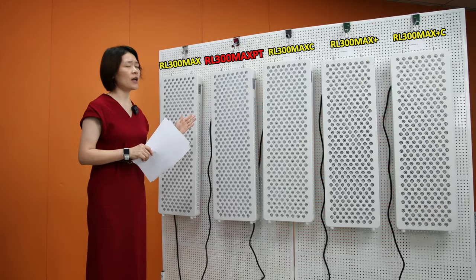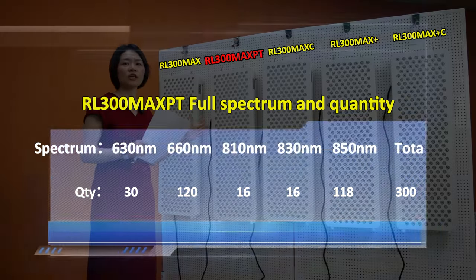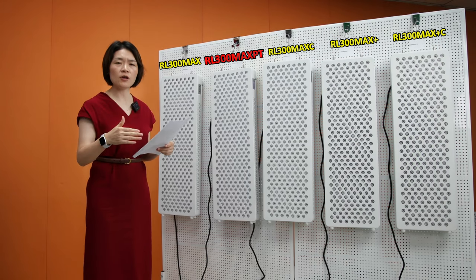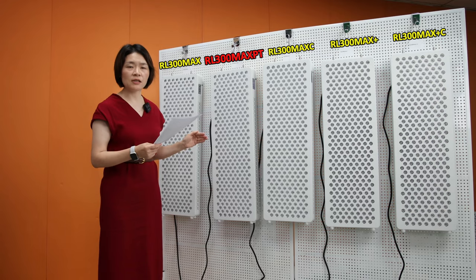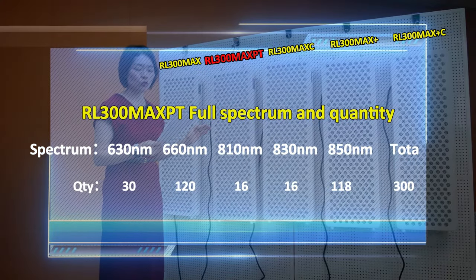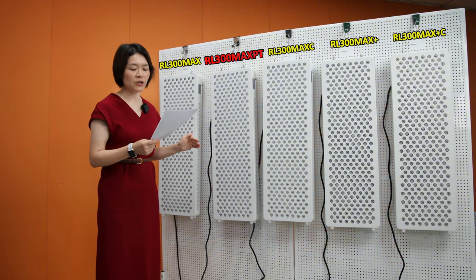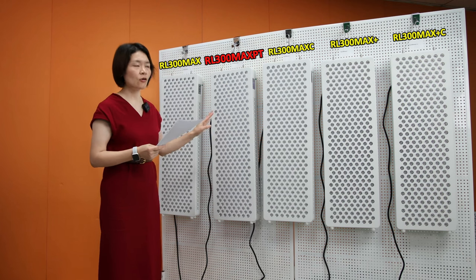The second model is the RL300 Max PT. This spectrum is our best-selling model. The spectrum includes 5 wavelengths: 630, 660, 810, 830, and 850 nanometer. The quantity for different wavelengths is different. Totally 300 LED chips, including 30 pieces of 630 nanometer, 60 pieces of 660 nanometer, 120 pieces of 810 nanometer, and 118 pieces of 850 nanometer — different quantities distributed across the different wavelengths.